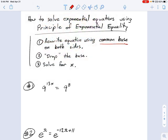Step number two, you drop the base. So what I mean by drop the base is, I'll show you by an example. We have 9 to the 13x equals 9 to the 8th power. Well, you just drop the base. It's like canceling out the base from both sides. And you get 13x equals 8.